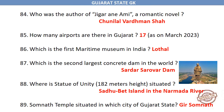Who was the author of 'Jigar Ane Ami', a romantic novel? Chunnilal Vardhaman Shah. How many airports are there in Gujarat? 17, as of March 2023. Which is the first Maritime Museum in India? Lothal. Which is the second largest concrete dam in the world? Sardar Sarovar Dam.